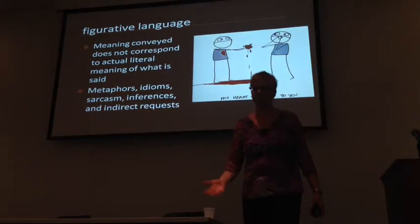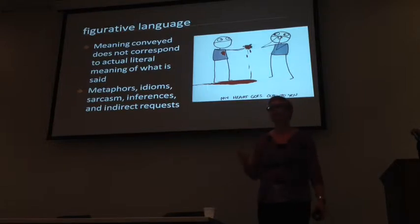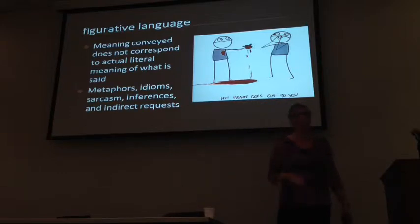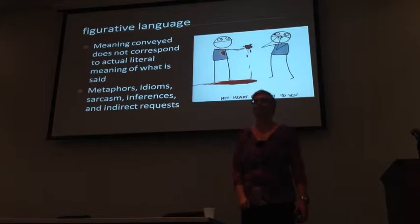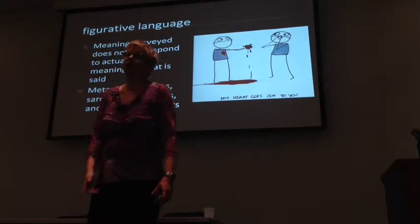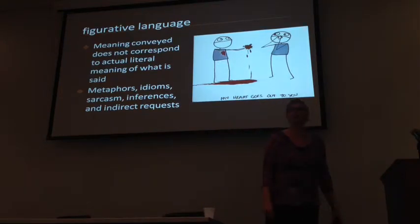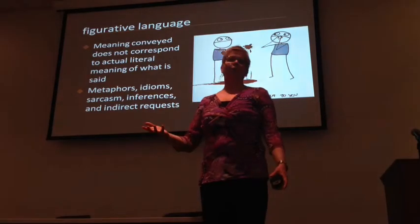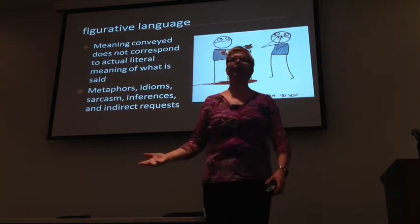Figurative language involves any kind of language where the literal meaning of what is spoken doesn't correspond to the actual meaning being conveyed. That includes metaphors, idioms, sarcasm — and we know that kids with autism often have trouble with sarcasm. It also includes inferences: if someone's walking down the street and their foot is dragging, there's an inference that they hurt their foot — you're not actually saying that, but kids with autism might have trouble with things not explicitly stated. And indirect requests: 'Can you open the window?' or 'It's hot in here' might be taken as purely factual rather than as a request.